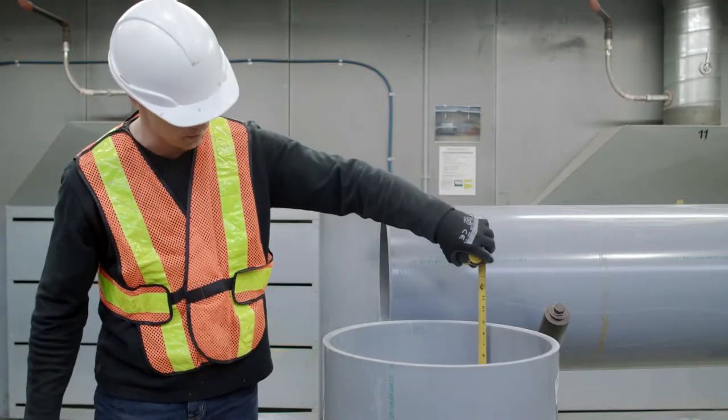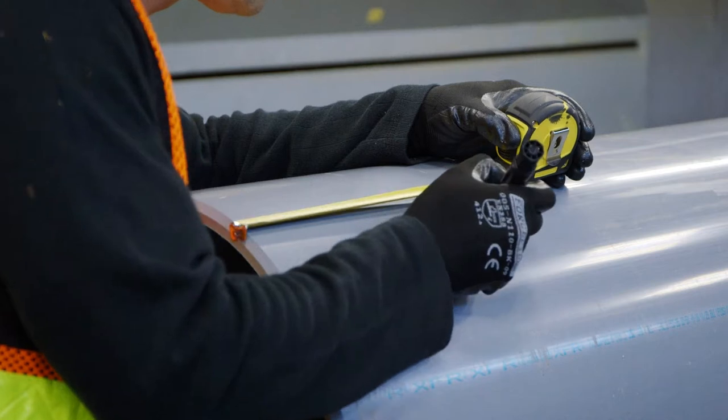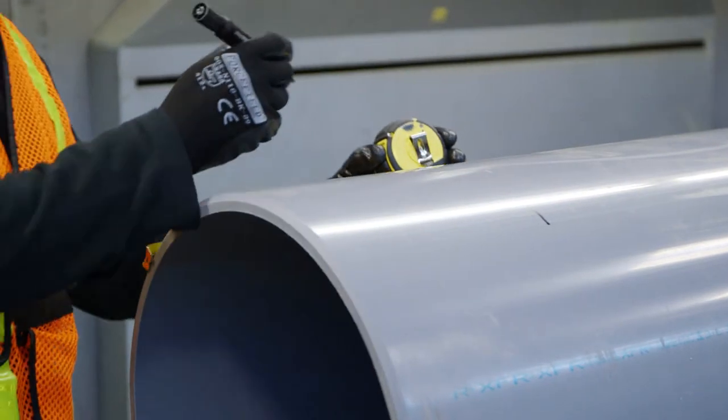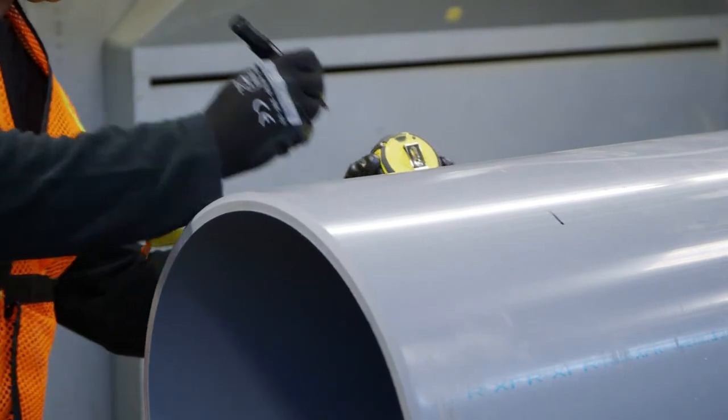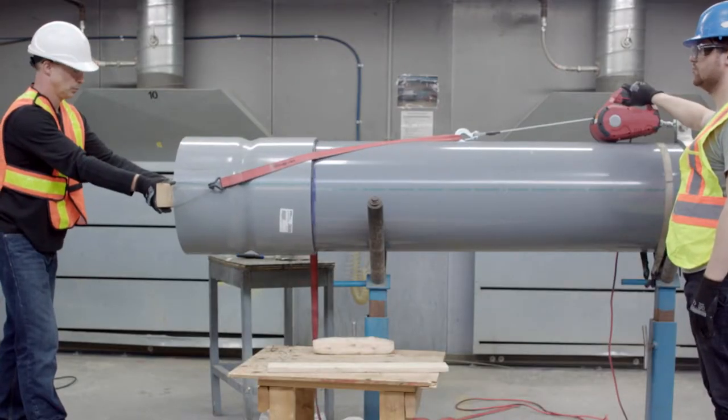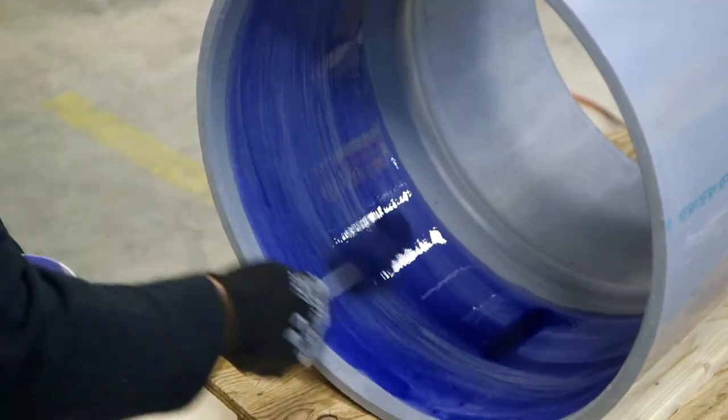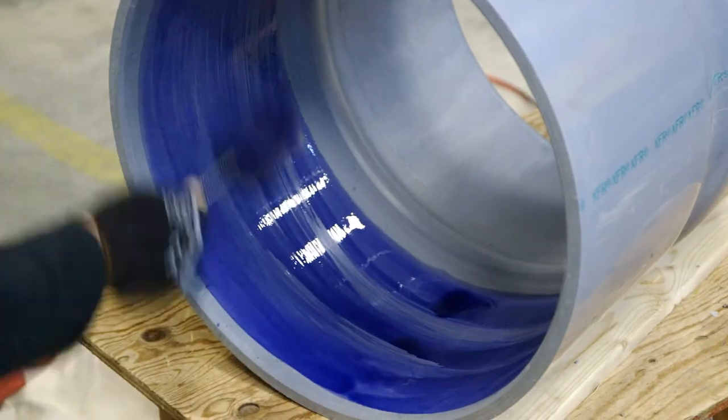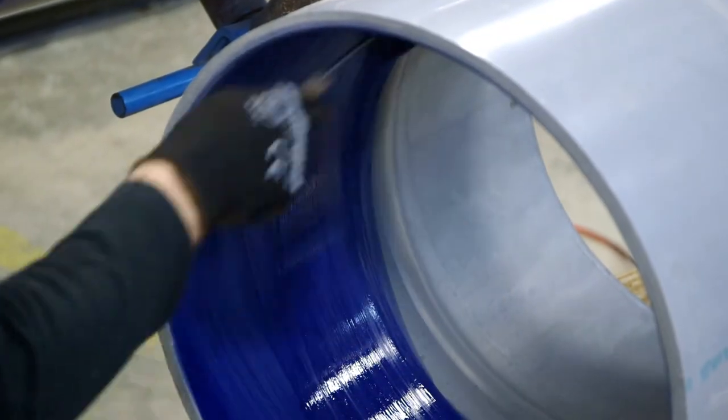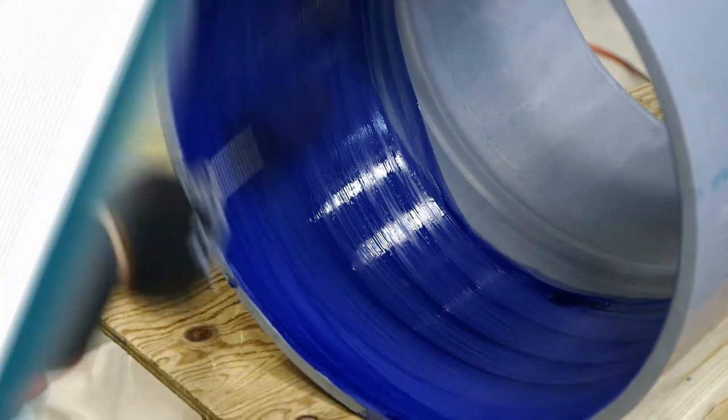Measure the fitting socket depth and mark the outside of the pipe with this dimension. This will help with application of the proper amount of primer and solvent cement on the pipe, and also helps indicate full and proper insertion of the pipe inside the fitting socket. Apply the primer to the inside of the fitting socket. Be aggressive and work the primer into the interior surface of the fitting socket. The goal is to penetrate and chemically soften the interior surface of the fitting socket.